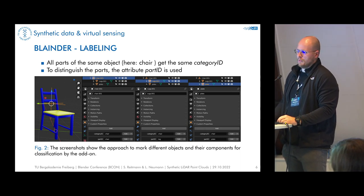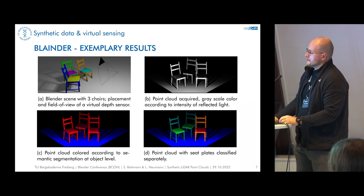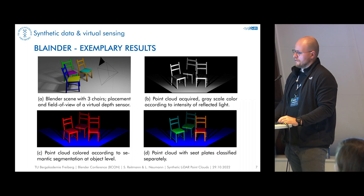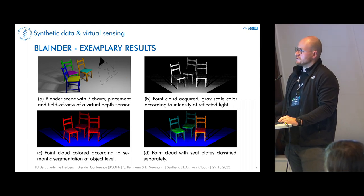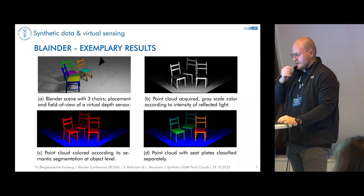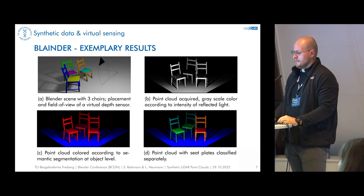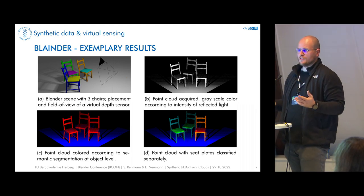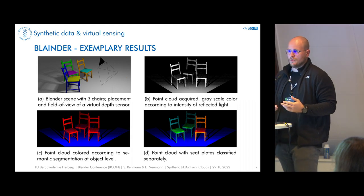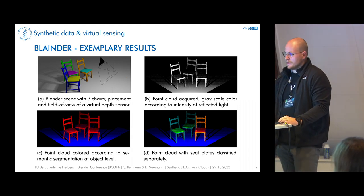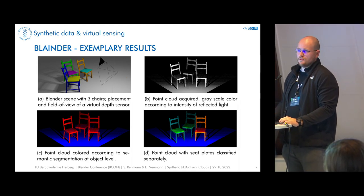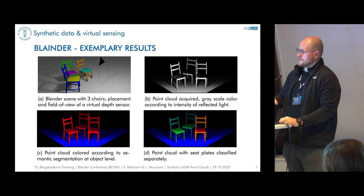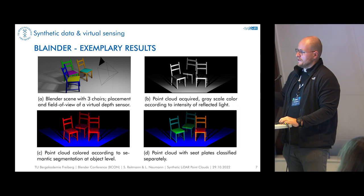Here's a simple example with three chairs. We have the 3D objects and our virtual sensor — the virtual sensor is always attached to a camera in our system. We set up all sensor specifications and parameters, and set up the different IDs for the labeling process. In image B we receive the raw point cloud data — this is what we would receive in reality: no classification, just an unordered set of points with X, Y, and Z coordinates, not yet linked to any object class.